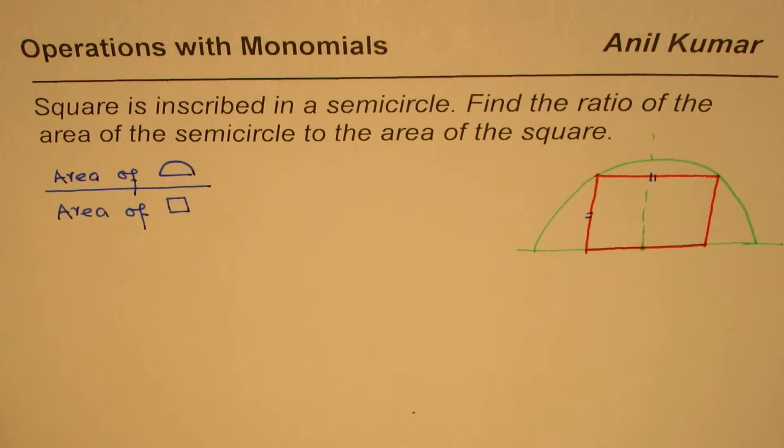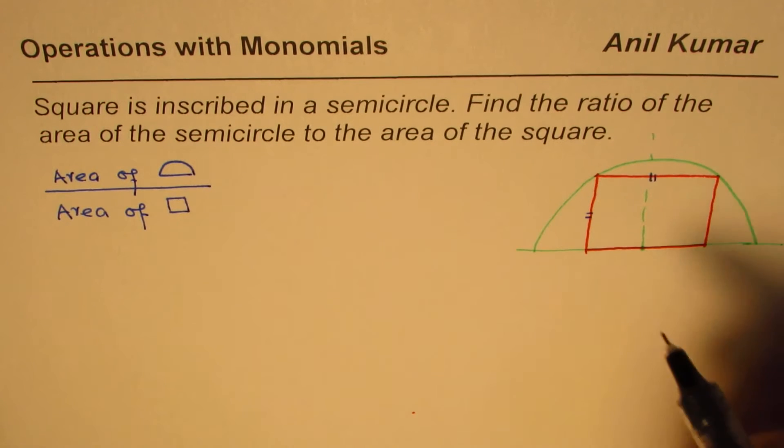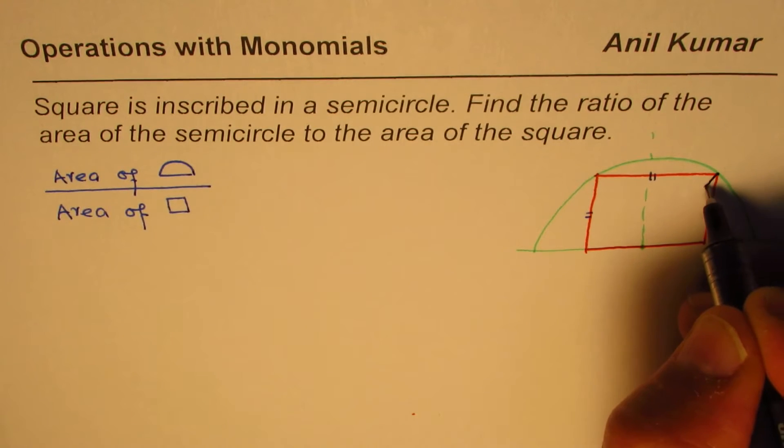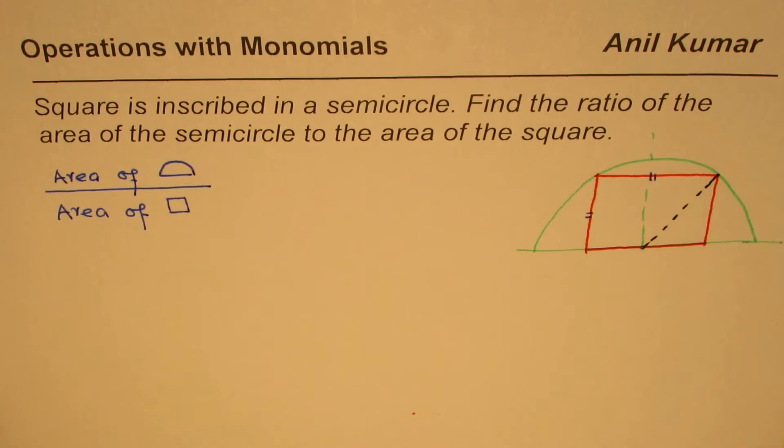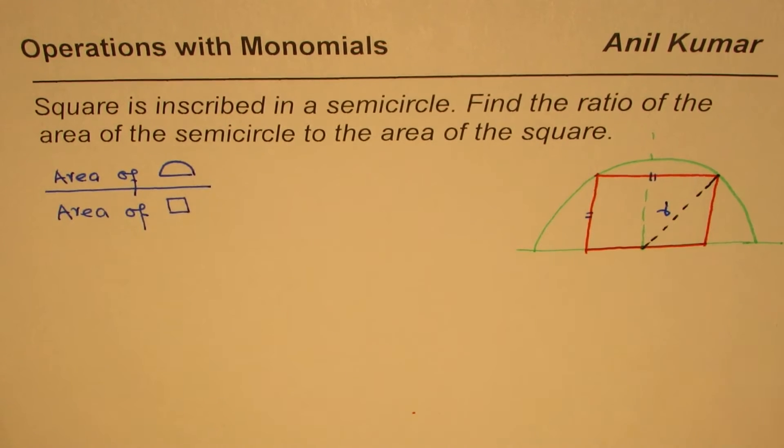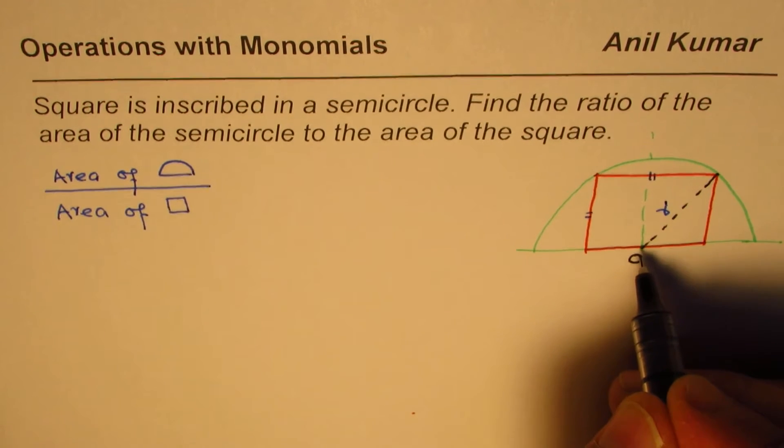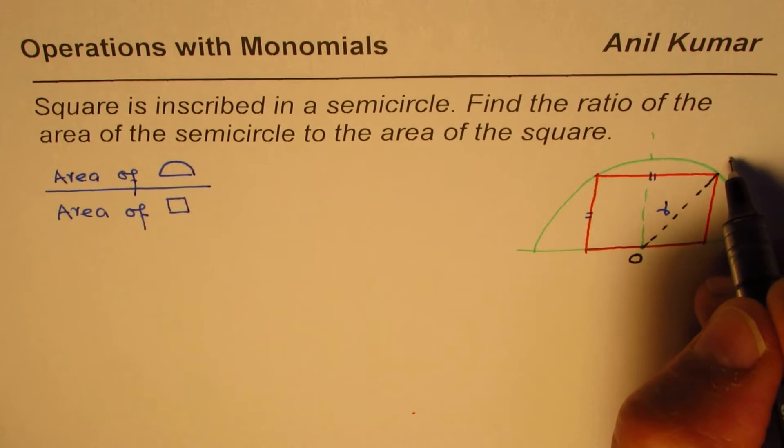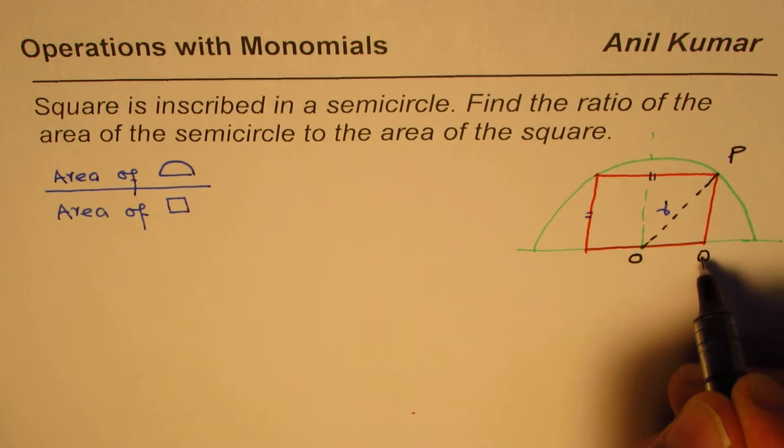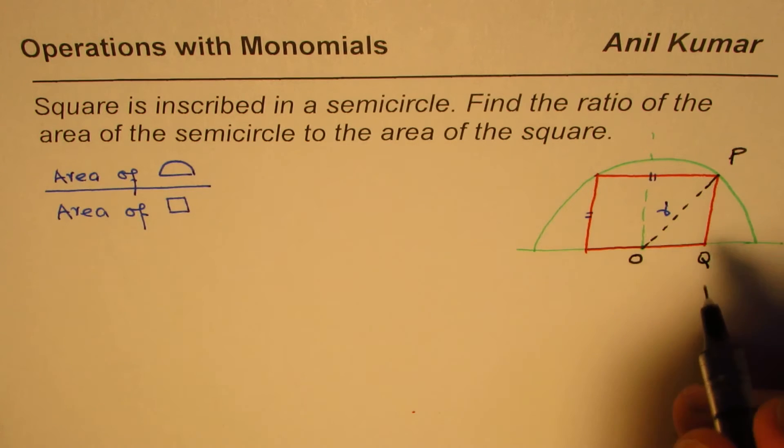I hope the question is very clear to you. You can pause the video also and then look into my suggestions. Now let us say that the radius of this semicircle is R. In that case, if I join these two points, then this distance should be R, right? So let me call this the center of this semicircle and let's call this point as P.